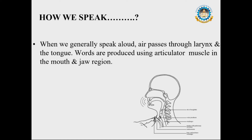Let us go to the basics — how we speak. When we generally speak aloud, air passes through the larynx and the tongue. Words are produced using the articulatory muscles in the mouth and jaw region.